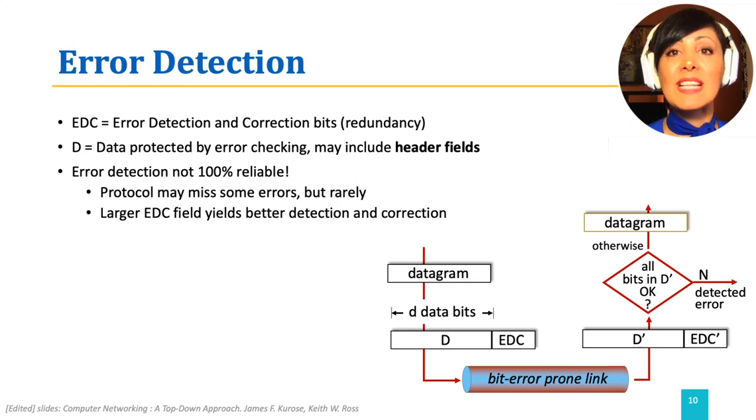An important caveat is that not all error detection is fully reliable. There might be some errors that are undetected. This depends on the strength of our detection mechanism. However, generally, the more EDC bits might enable us for better detection. We are going to examine a few EDC mechanisms that can help us in error detection.